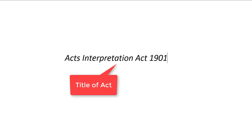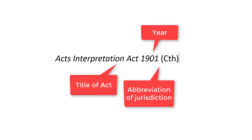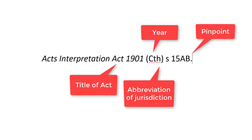Citing legislation is not complicated. The most common error people make is forgetting the jurisdiction. Start with the title of the Act, in italics, followed by the year, which is also italicised. The abbreviation for the jurisdiction should then be listed, in round brackets, with a full stop completing the citation. To include a pinpoint, identify the particular section, paragraph, part or schedule.